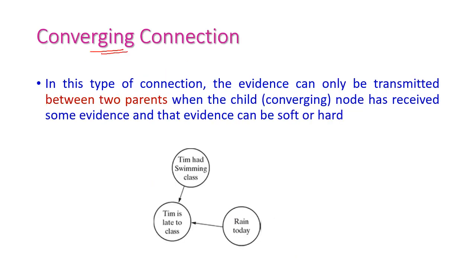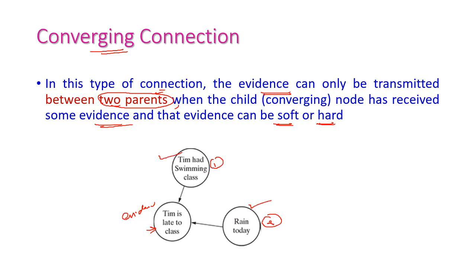The third one is converging connection. In a converging connection, evidence can be transmitted between two parents. Here, this is one parent and this is the second parent. The child node receives evidence from one parent and some evidence from another parent. The evidence can be either soft evidence or hard evidence. For example, parent one is 'Tim had swimming class' and parent two is 'raining today.' Based on both of these, 'Tim is late to class' will be computed.